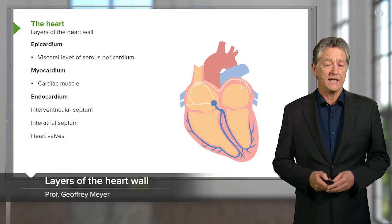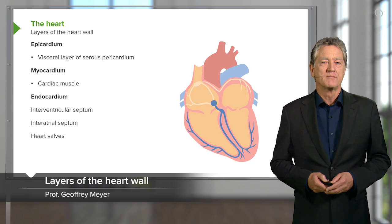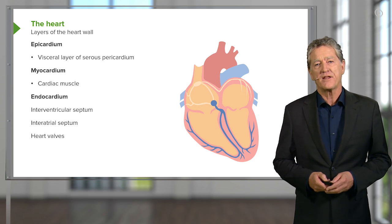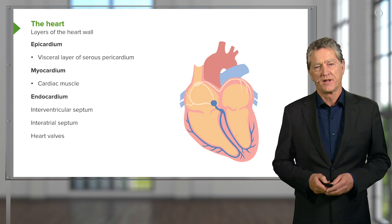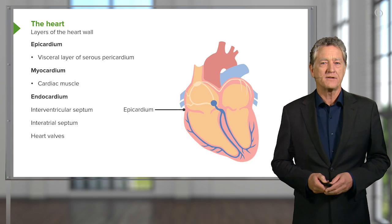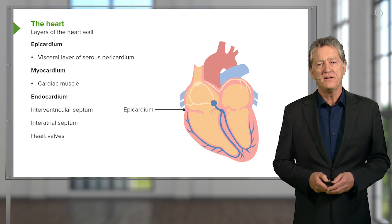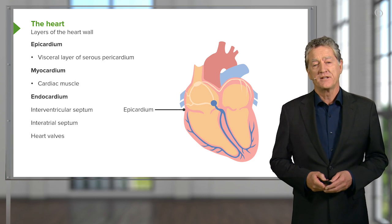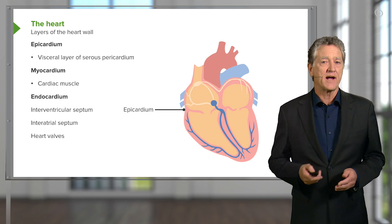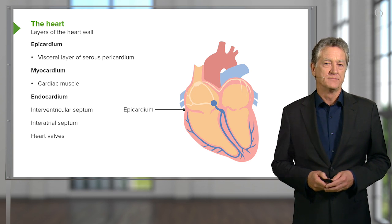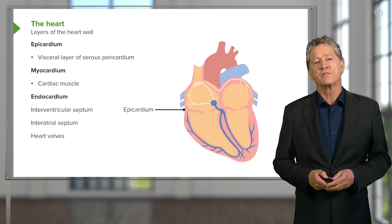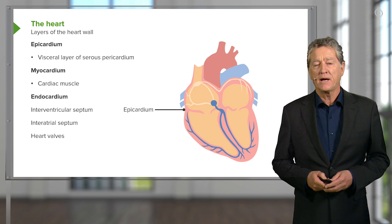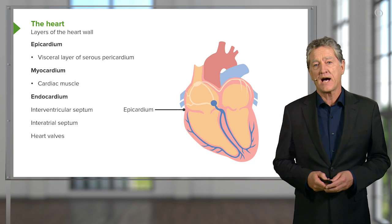Looking at this diagram, there are three different components to the wall of the heart. First, the heart is lined on the outside by a thin membrane called the epicardium. This epicardium is actually a visceral layer of the pericardium, because it reflects back on itself and creates a pericardial cavity or sac in which the heart sits and pumps.